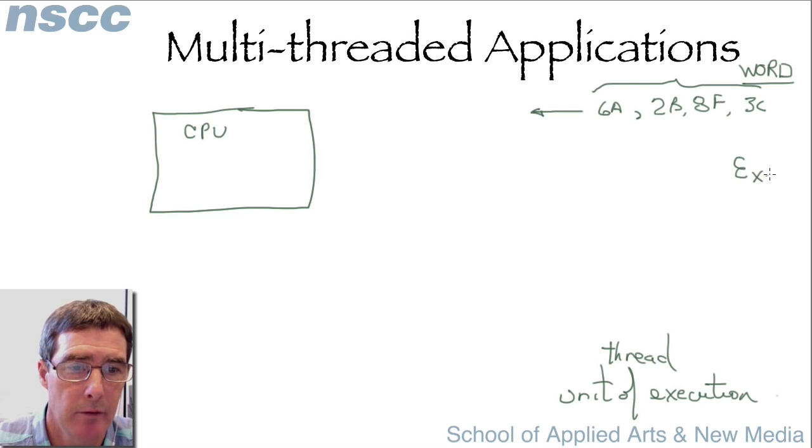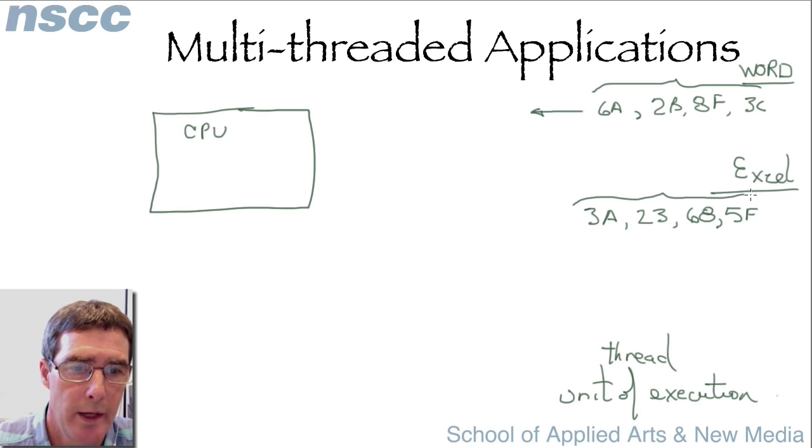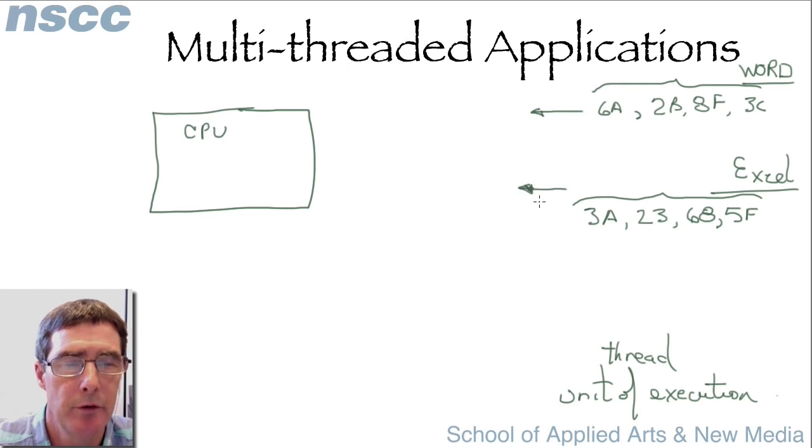Where we had wanted to have multiple applications open at once. So we may have a second application, maybe Excel spreadsheet. And it has its own set of instructions that are being executed to carry out its task. Maybe it's generating or recalculating a spreadsheet. And so now we have a second thread that we want to execute. And we want it to appear to the user that's being executed at the same time.